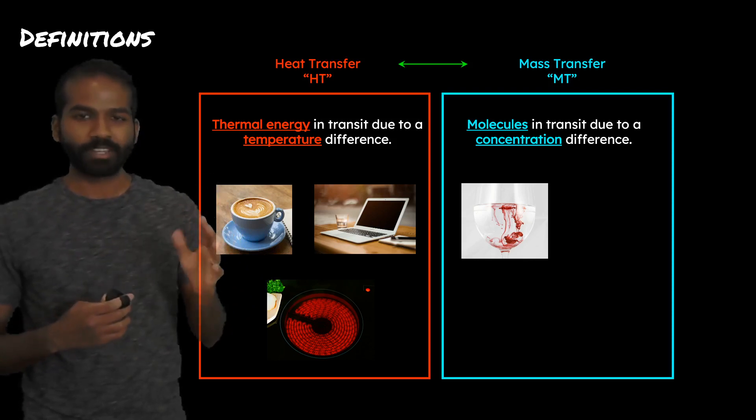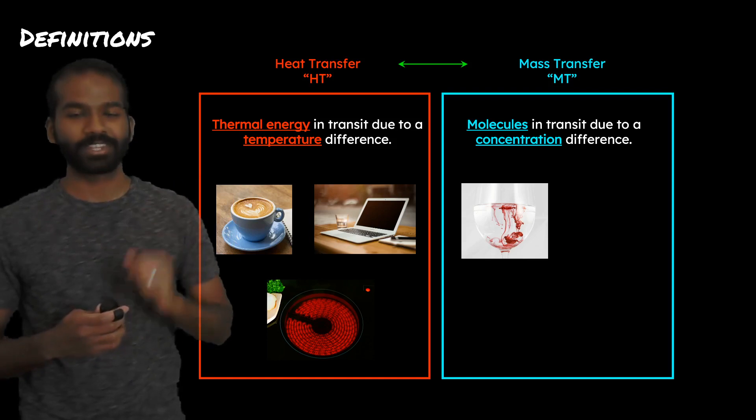These are molecules moving from a point at which they are very concentrated to areas at which they are less concentrated. Molecules in transit due to a concentration difference.